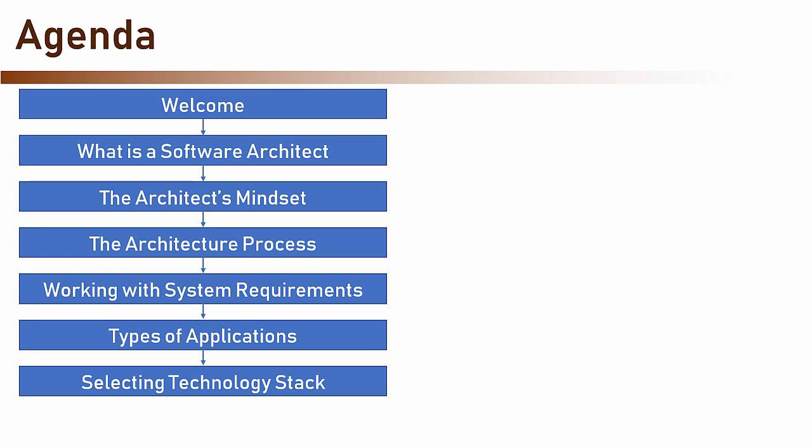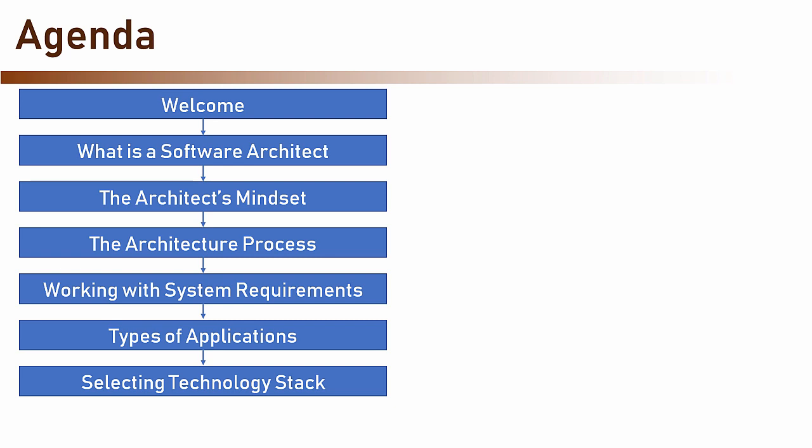Having selected the technology stack, it's time to start talking about the architecture. But wait! Before discussing architecture, we need to meet a set of capabilities that will help us design an architecture that fulfills the non-functional requirements. And in order to fully understand the non-functional requirements, we will meet the ilities. No, they are not a family of weirdos, but a set of non-functional requirements every architect should know about and make sure her architecture is well suited for them.